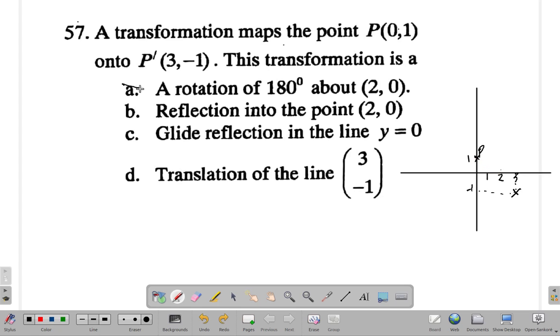Option B: reflection into the point (2,0). Well, if you reflect this, it would be the same thing. If you reflect this over this point, it would come down here. But you'd have to go 2 to the left and one up, then 2 to the right and one down, and it would be below 4, not 3. So this wouldn't work.